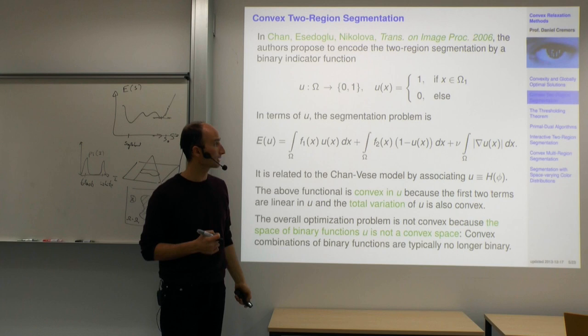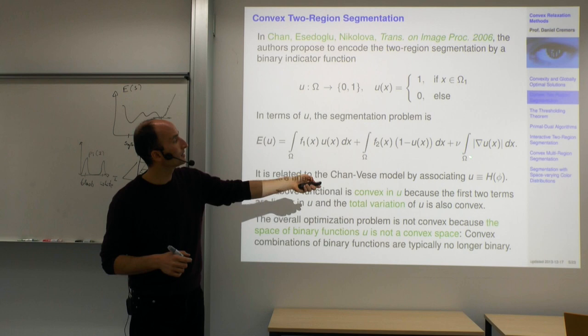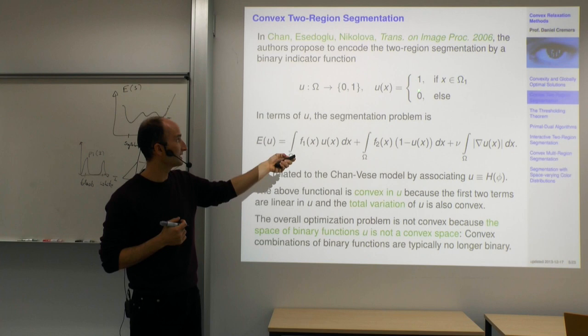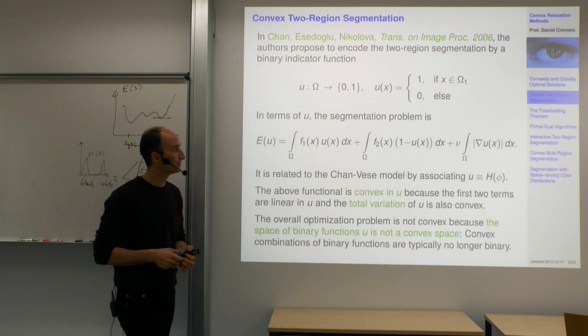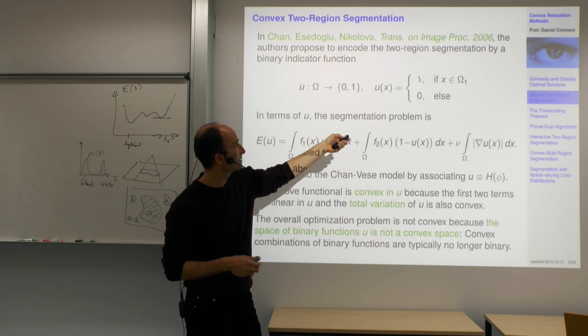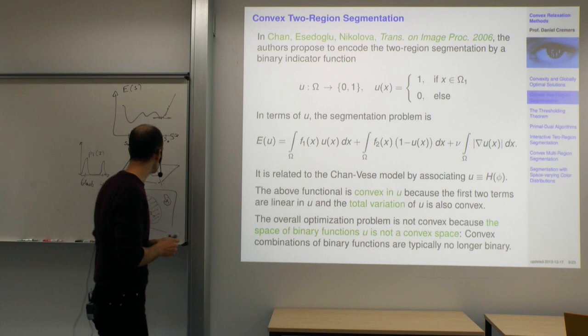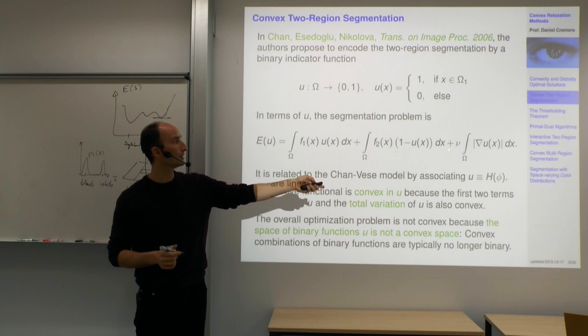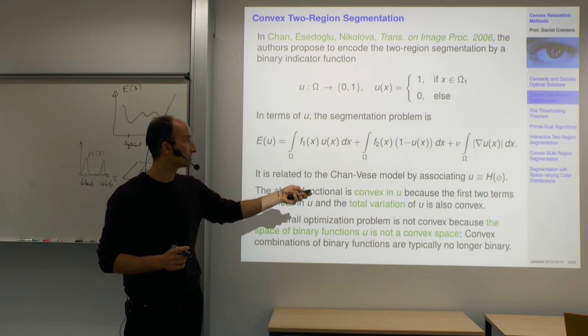The boundary length is nothing but the total variation of the function u. If you have an indicator function u of some set, the total variation encodes the boundary length. The reason is that u is constant 0 outside and constant 1 inside, so the gradient is 0 in most places except at the boundary — at the transition between u = 1 and u = 0 — where its integral is just the length of the boundary.